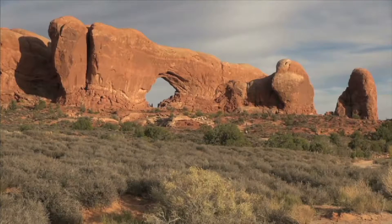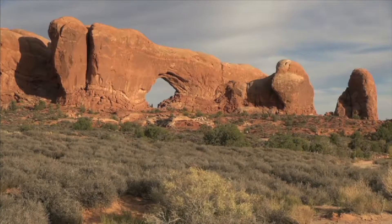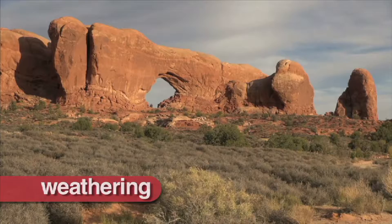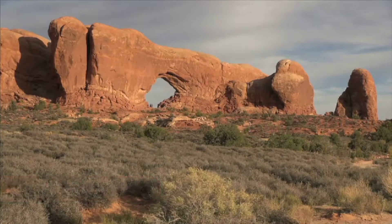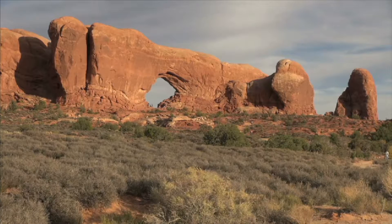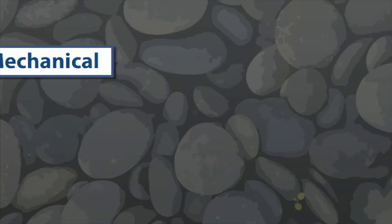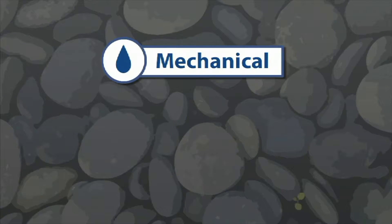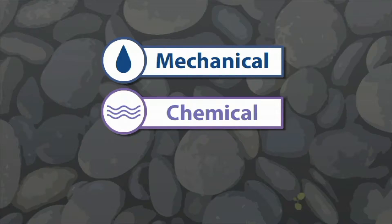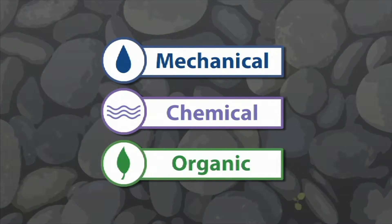Erosion can't happen without weathering. Weathering is the process by which rock is broken down into smaller and smaller pieces by the wind and water. There are three types of weathering: mechanical, chemical, and organic.